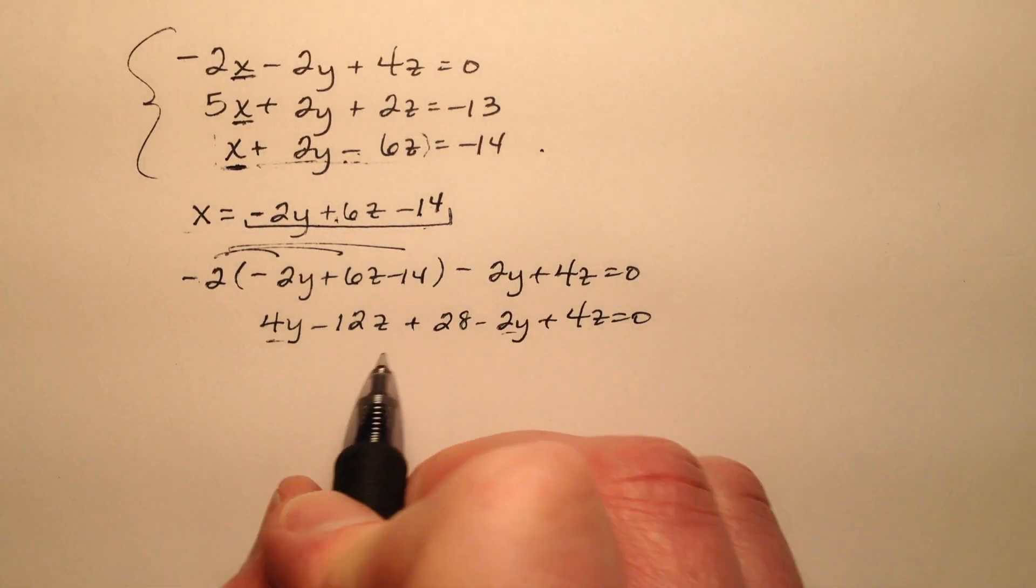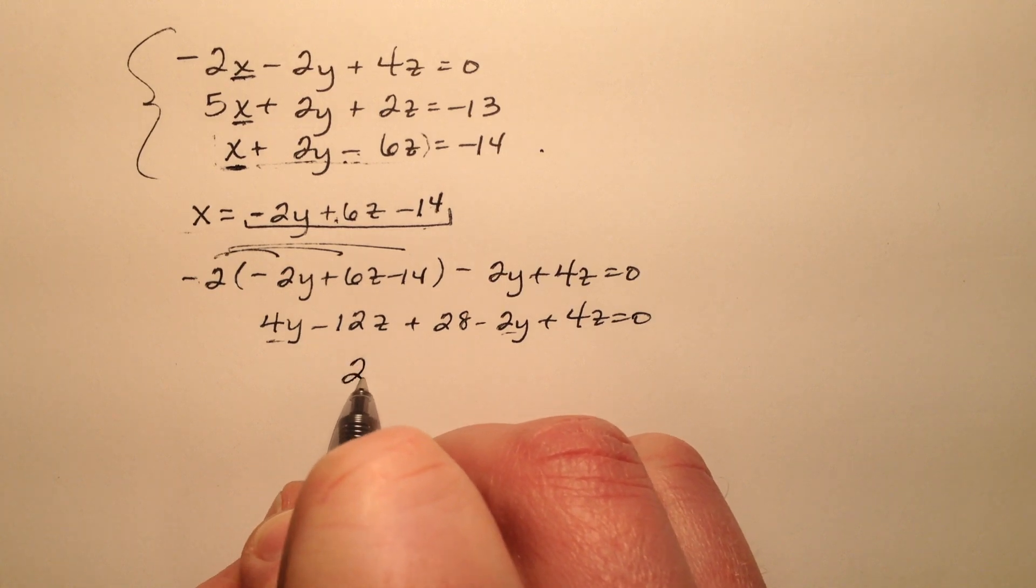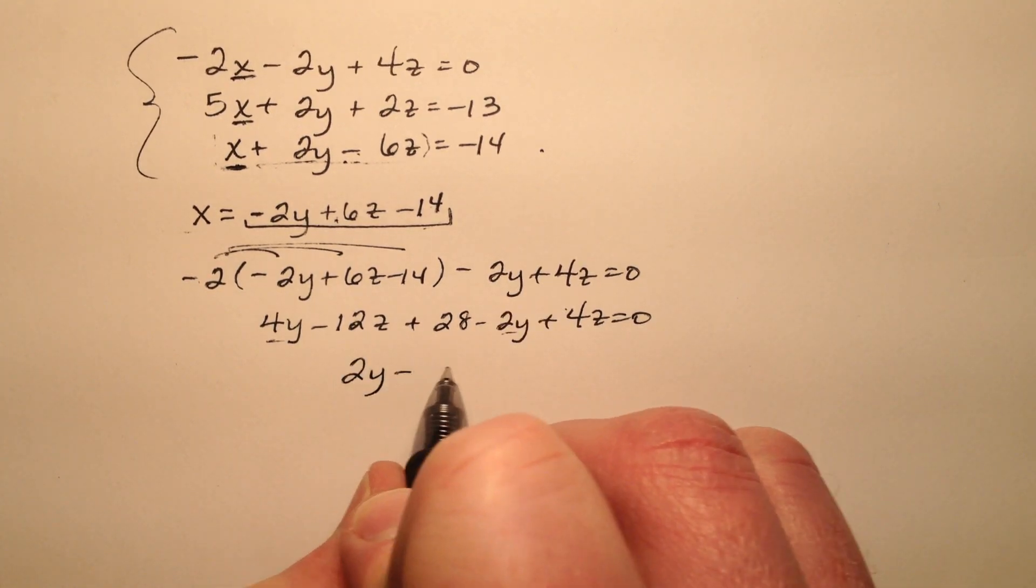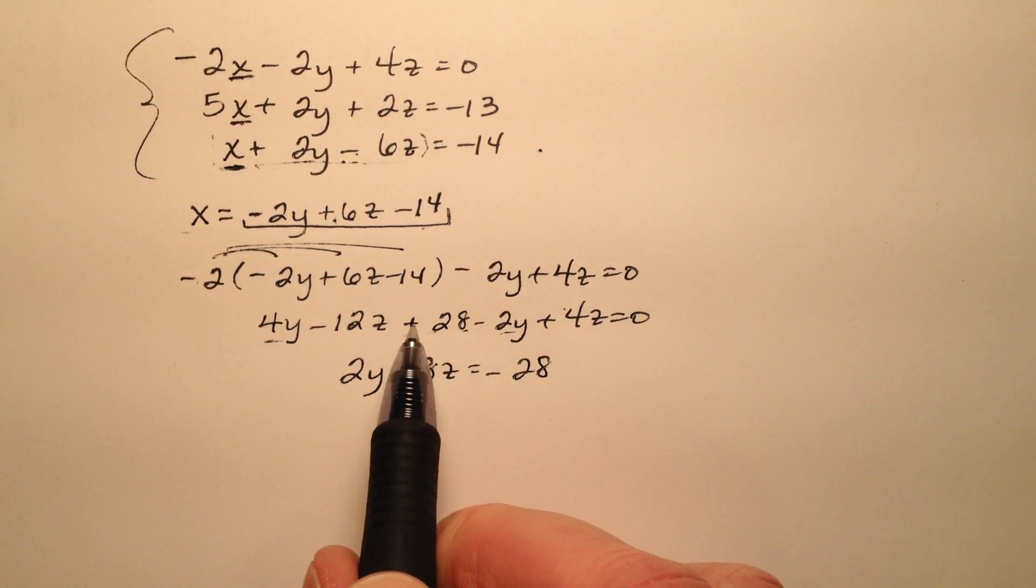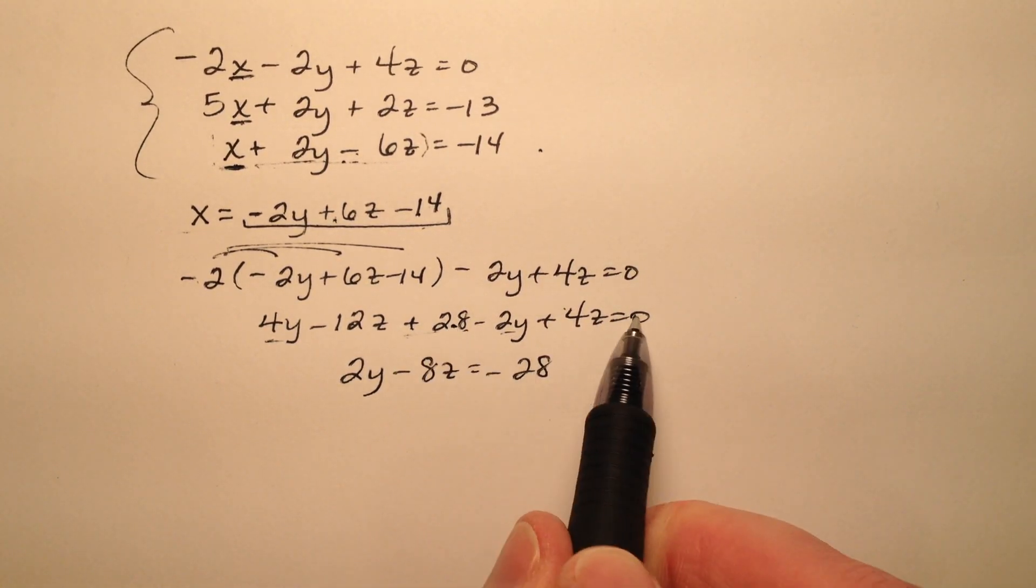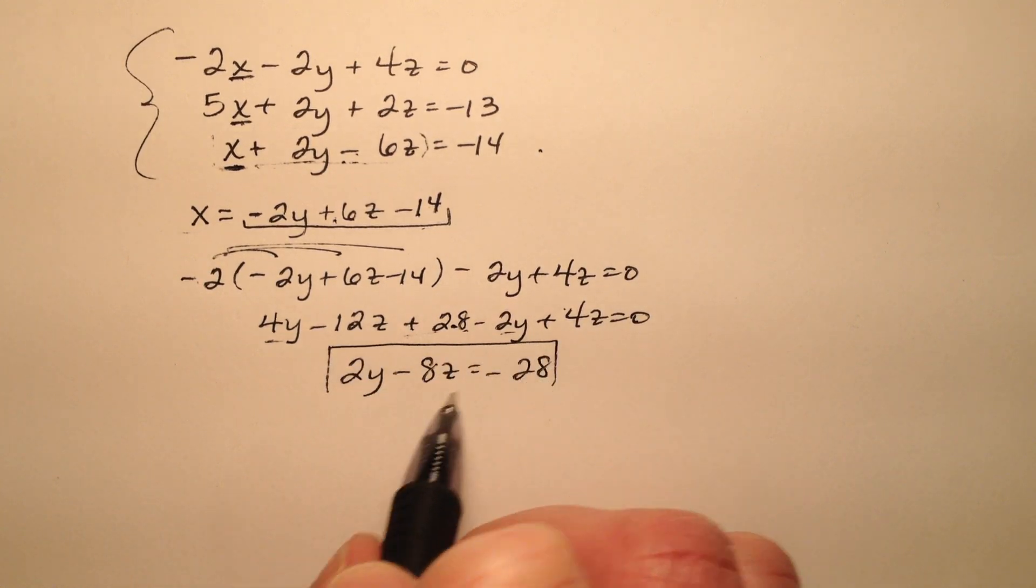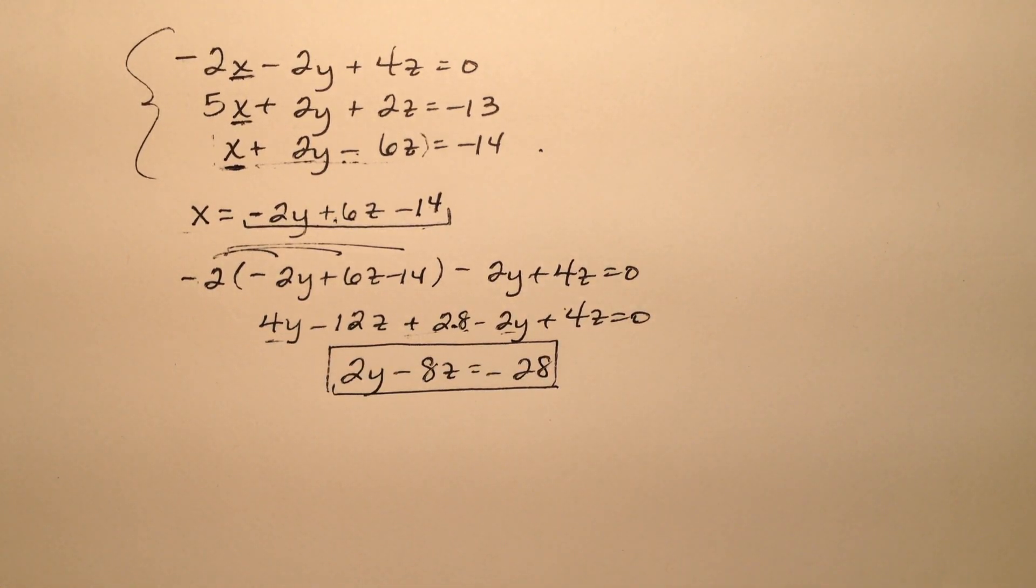So as I go to combine like terms, I'll see I have a 2y and a minus 8z, and that's going to equal negative 28 when I move that constant from the left to the right. So I see how I have this first equation.